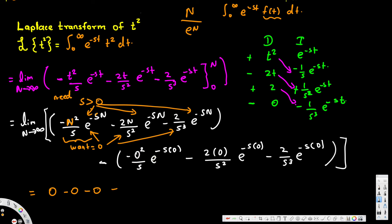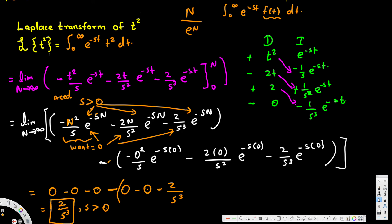After substituting zero: zero squared is zero, 2 times 0 is zero, and e to the zero is 1, so those terms vanish. We are left with minus negative 2 over s cubed times 1, and the double negative gives us positive 2 over s cubed. So the Laplace transform of t squared is 2 over s cubed, where s must be greater than zero. I hope you found this video helpful — check out my differential equations playlist and don't forget to subscribe!